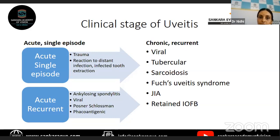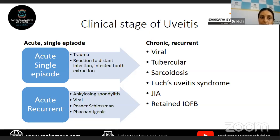Coming to the clinical staging of uveitis — whether it is acute, chronic, or acute recurrent — the etiology is different in each case. If you know this is an acute uveitis, a single episode, it can be because of trauma, a reaction to some distant infection like an infected tooth extraction or sinus infection. These conditions are usually very self-limiting — they heal very well with treatment and do not need to be investigated much.